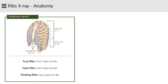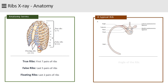In this drawing you can also see the typical rib from an inferior view. Note the body extends laterally and then angles forward and downward. This angulation is termed the angle of the rib.